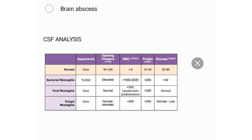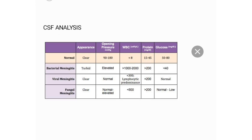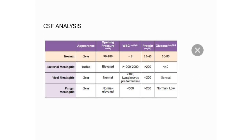For fungal meningitis: appearance is clear, opening pressure is normal to elevated, WBC is less than 500, protein is more than 200, and glucose is normal to low. For TB meningitis, the appearance has a characteristic cobweb appearance.